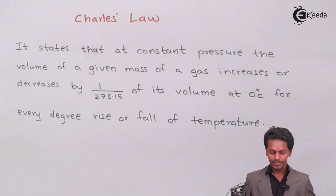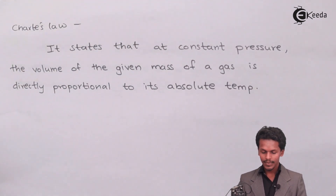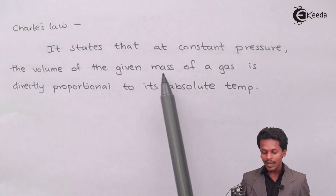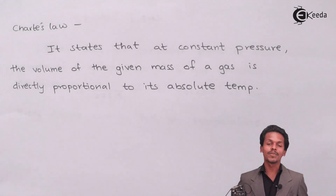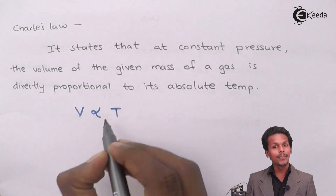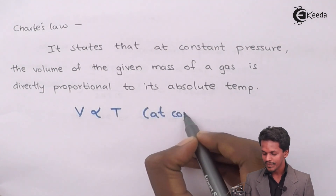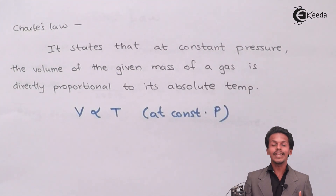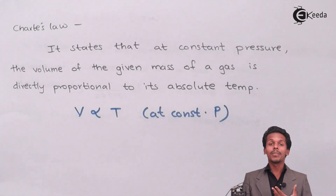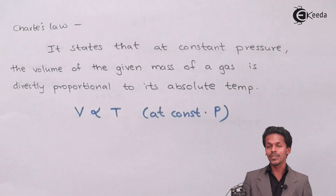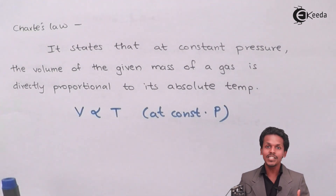In simple words, according to Charles's Law, it states that at constant pressure, the volume of a given mass of a gas is directly proportional to its absolute temperature. This means the volume is directly proportional to temperature at constant pressure — if temperature increases, volume increases, and if temperature decreases, volume decreases.